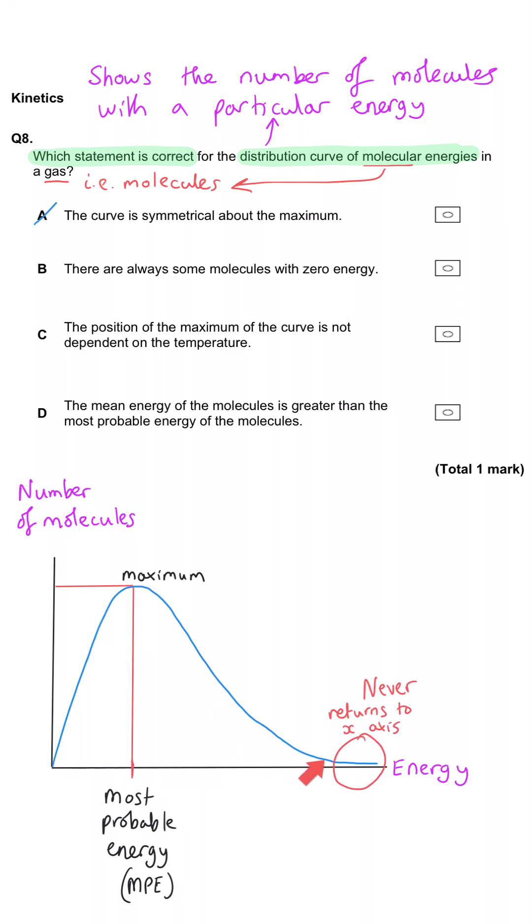So the curve goes down steeply, but then it gradually gets shallower and shallower, but never meets the x-axis. So that's not correct.